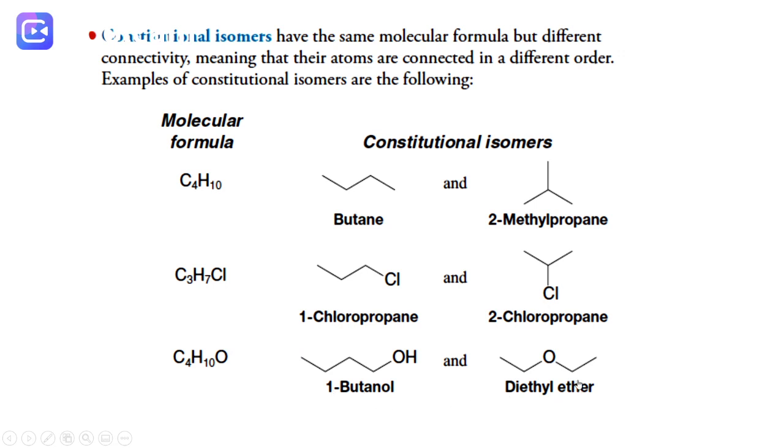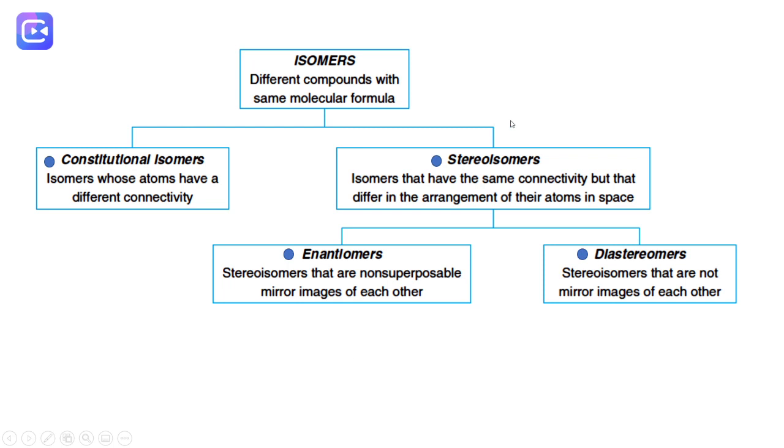Now we will talk about stereoisomers. Stereoisomers have two different types. When you talk about stereoisomers, that means we have different compounds that have the same molecular formula, the same atom connectivity, but the atoms are arranged differently in space.